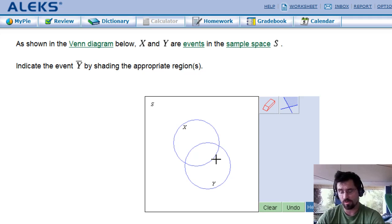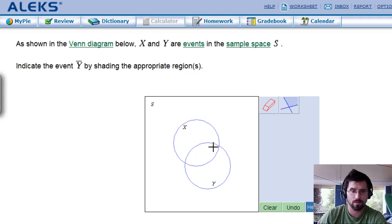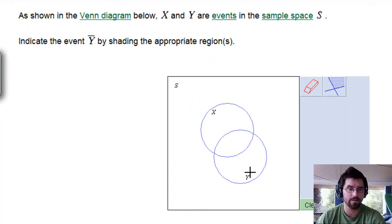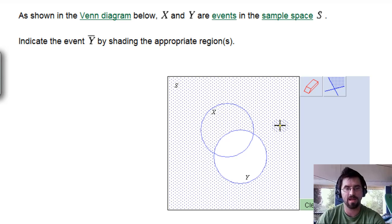And so when I see Y, I'm thinking about this circle. However, when I see a bar over the top, that is the complement of Y or not Y. So if I am trying to shade the region that is not part of Y, I would have to shade everything that is outside the circle, and that is the result I would get. It's very straightforward.